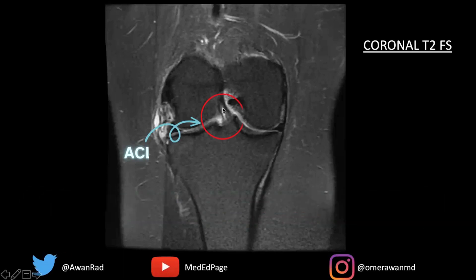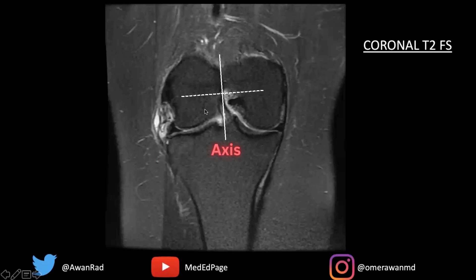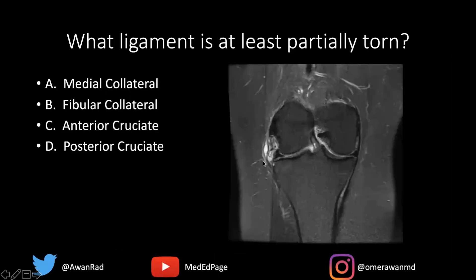Notice that there is some signal in the ACL — that's allowed. You're allowed to have some signal within the ACL. Remember, there's an anterior medial and a posterior lateral bundle. As long as the signal is not going perpendicular to the axis of the ligament and is actually flowing along the fibers of the ligament, this is not a torn ACL. So the best answer here is the fibular collateral ligament is at least partially torn.